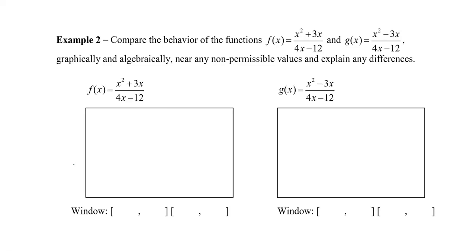In this video, we're going to take a look at non-permissible values and see what causes a point of discontinuity and what causes a vertical asymptote.